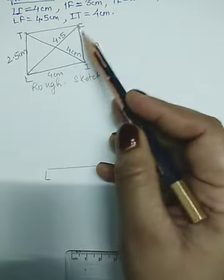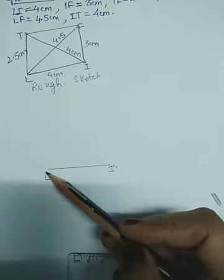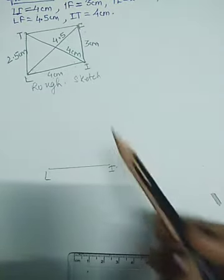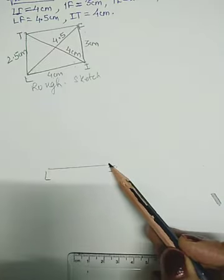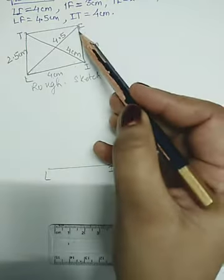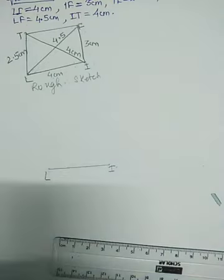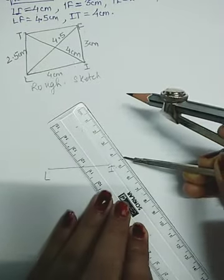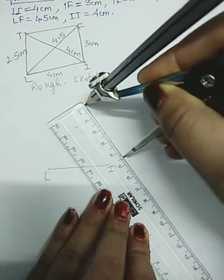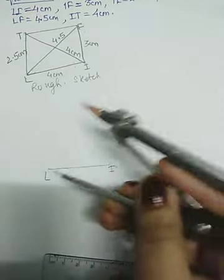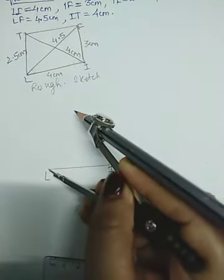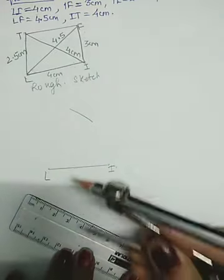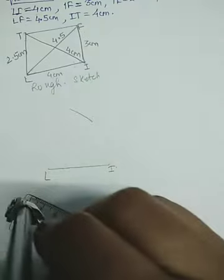Take an arc of length 4.5. Now from here, L, we will cut the arc of length 4.5. And taking I as a center, we will cut another arc of length 3 cm. Take L as center. Draw an arc. Another of length 3 cm.